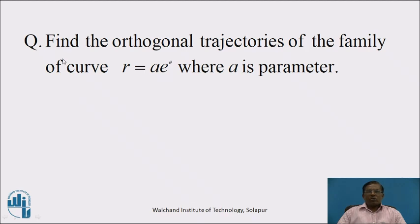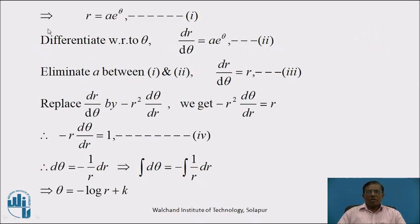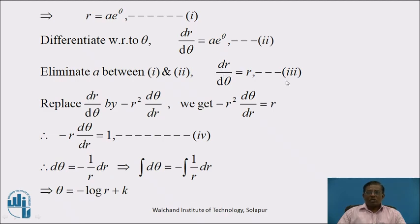Let us pause the video for a while and write the answer to the given question. The question is: find the orthogonal trajectories of the family of polar curve r = a · e^θ, where a is a parameter. Let us denote the given curve r = a · e^θ by equation 1. First, differentiate this curve with respect to theta. We get dr/dθ = a · e^θ. Denote this equation by 2. Now we have to eliminate parameter a between equation 1 and 2. From equation 1, a · e^θ = r. Substituting into the right-hand side of equation 2, we get dr/dθ = r. Denote this equation by 3.